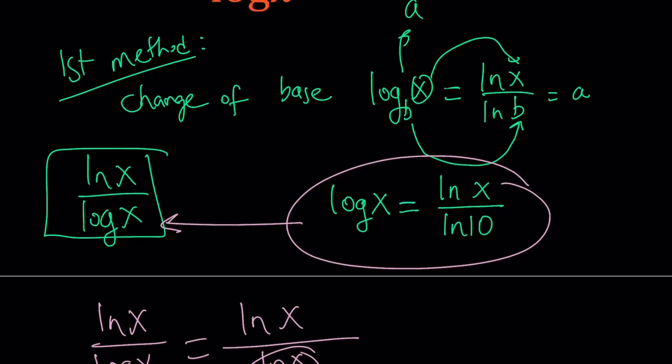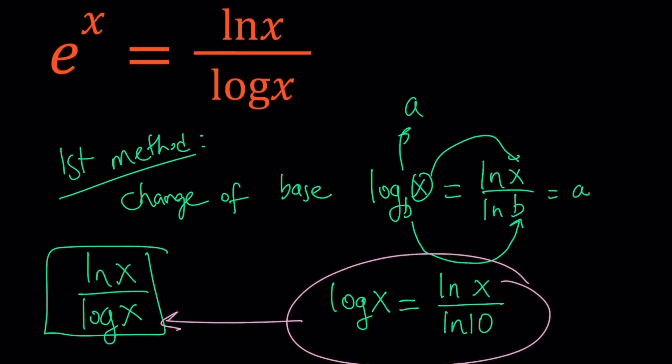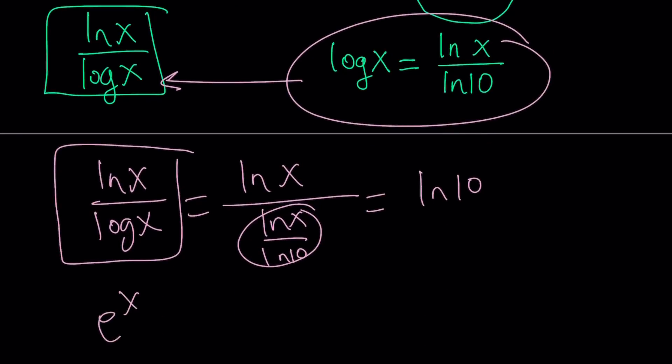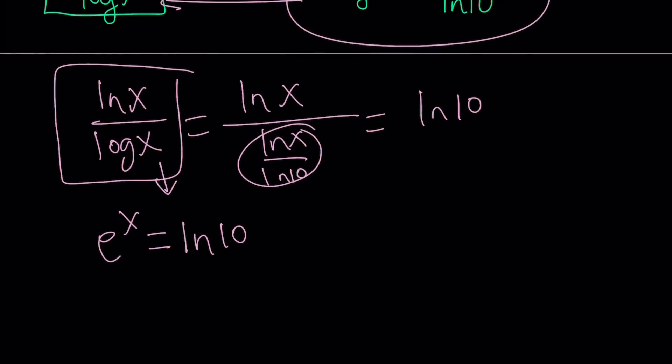And when you flip and multiply, ln x is going to cancel out and you're going to end up with ln 10. So this variable-looking expression is not actually a variable. It is a constant. It's a constant in disguise. So we have now e to the power x equals this, which is ln 10. And this equation is very easy to solve. Just ln both sides. We ln a lot. ln e to the x equals ln ln 10. And then from here, x moves to the front and x becomes ln ln 10.